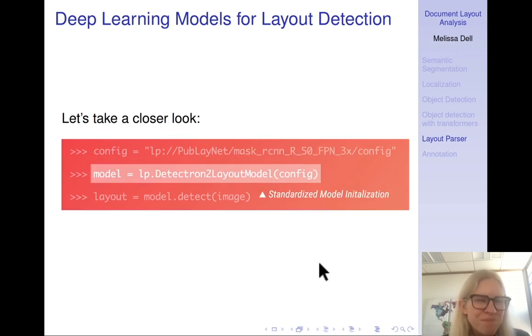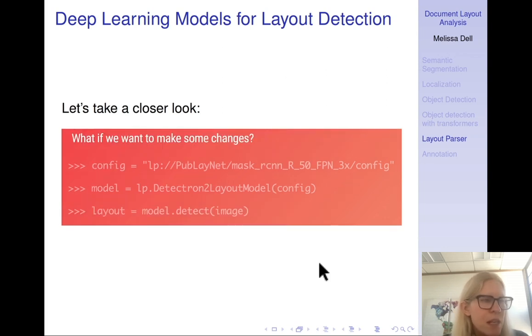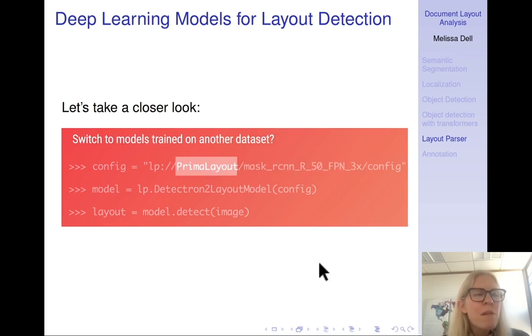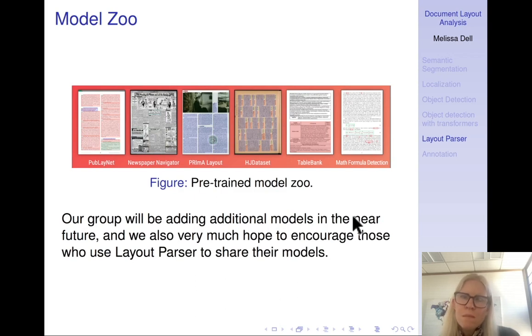The backend is Detectron 2. And then you call the standardized model detection API. So suppose we want to make some changes. I just now change mask RCNN to faster RCNN, which there's a model for. And now I changed what it was trained on from Publainet, which is academic articles to PrimoLayout, which is magazines. And now I change the backend from Detectron 2 to Paddle Detection.